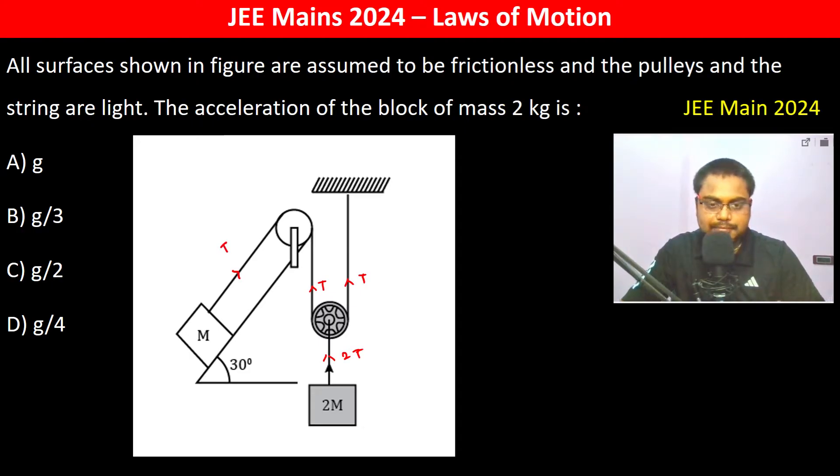Now if X distance of this pulley goes down, the acceleration here is going to be a. Therefore in this direction again X string will be pulled apart and here also X string will be pulled apart. So the total length which will be pulled apart from here is 2X, therefore the acceleration is going to be 2A.